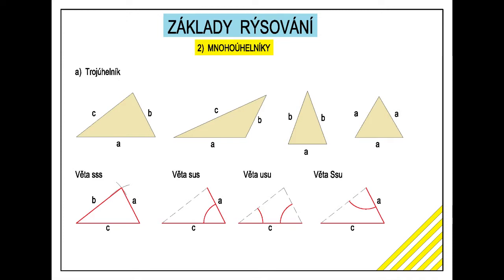Trojuhelník je mnohouhelník s nejnižším možným počtem vrcholů. Trojuhelníky jsou obecné, tupouhlé, rovnoramené, rovnostrané. Při konstrukci je nutné znát věty o podobnosti trojuhelníků. Věty definují minimální počet a druh parametrů nutných k sestrojení trojuhelníků.